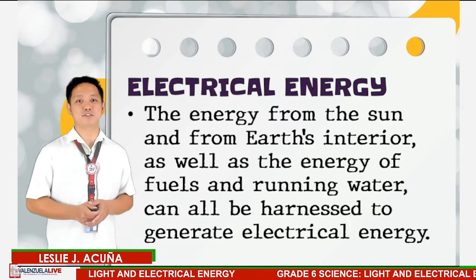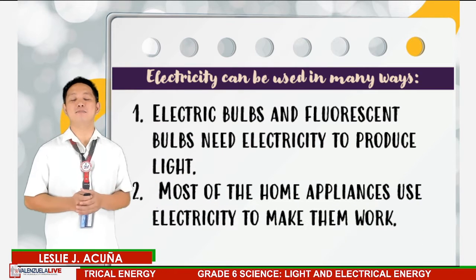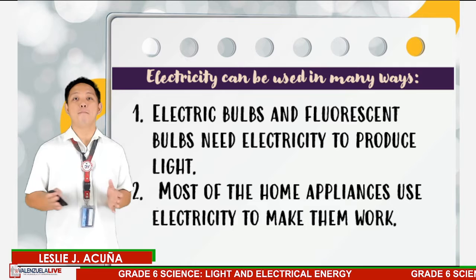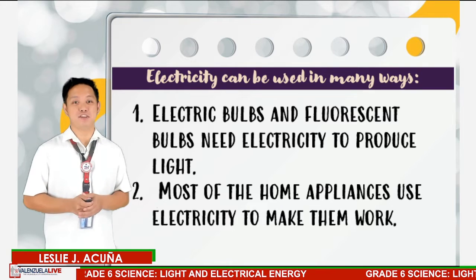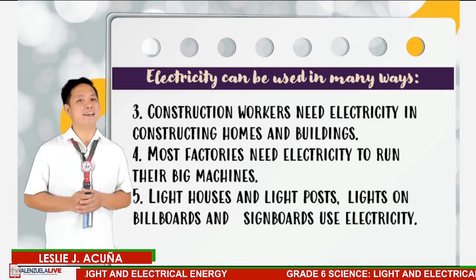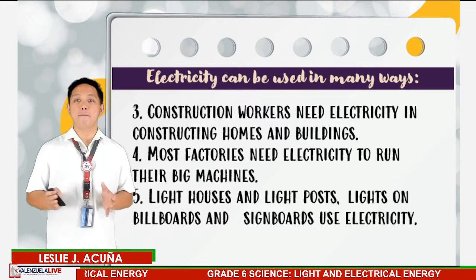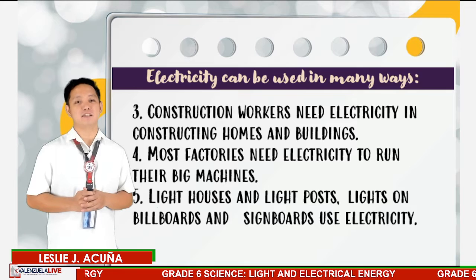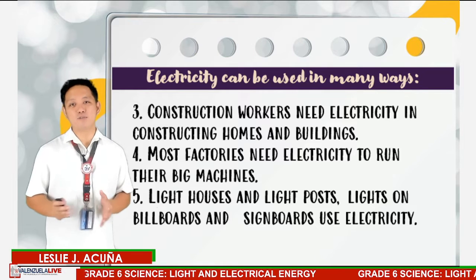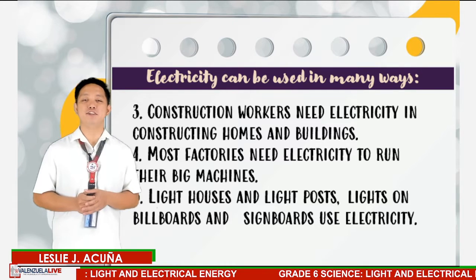Electricity can be used in many ways. Number one, electric bulbs and fluorescent bulbs need electricity to produce light. Most home appliances use electricity to make them work. Construction workers need electricity in constructing homes and buildings. Most factories need electricity to run their big machines. Number five, lighthouses, light posts, lights on billboards, and signboards also use electricity.